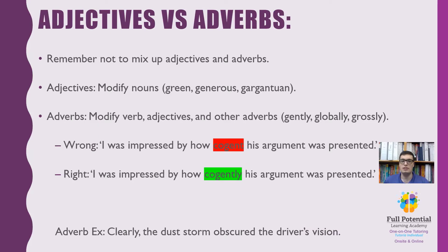Remember not to mix up adjectives and adverbs when you want to use them in a sentence. Adjectives should only be used to modify nouns, and adverbs should only be used to modify verbs, adjectives, or other adverbs. We see this in the example below: 'I was impressed by how cogent his argument was presented' must be changed to 'I was impressed by how cogently his argument was presented' in order to have the correct form — cogently as an adverb, not an adjective.